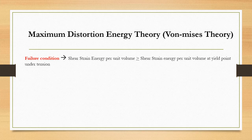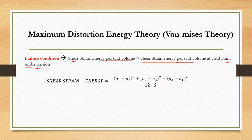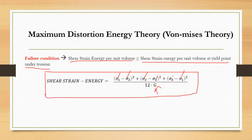The maximum distortion energy theory is given by Von Mises. It states that whenever the shear strain energy per unit volume becomes greater than or equal to the shear strain energy per unit volume at the yield point from the tensile test, the material will fail. The shear strain energy per unit volume is: [(Sigma_1 − Sigma_2)² + (Sigma_2 − Sigma_3)² + (Sigma_3 − Sigma_1)²] / 12G, where Sigma_1, Sigma_2, Sigma_3 are the principal stresses and G is the shear modulus.